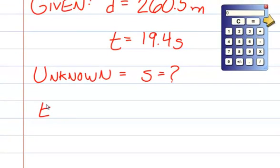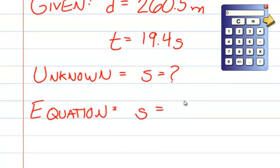Next, we need to write down the equation. And we know from our notes, in order to find speed, the equation is S equals D divided by T.